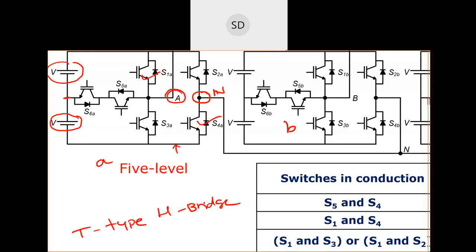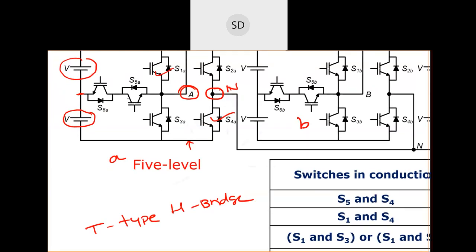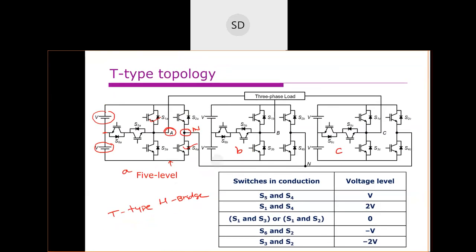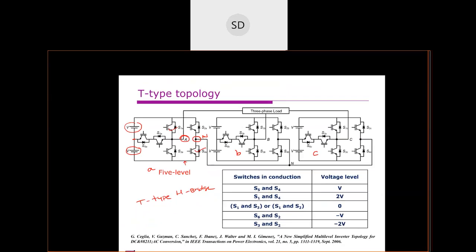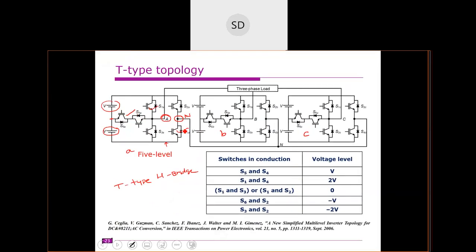To obtain V voltage between A and N, we need to turn on specific switches — these two switches plus the bi-directional switch — to obtain the V voltage level. Similarly, for zero voltage level we need to turn on either this pair of switches or the other pair to obtain zero voltage.